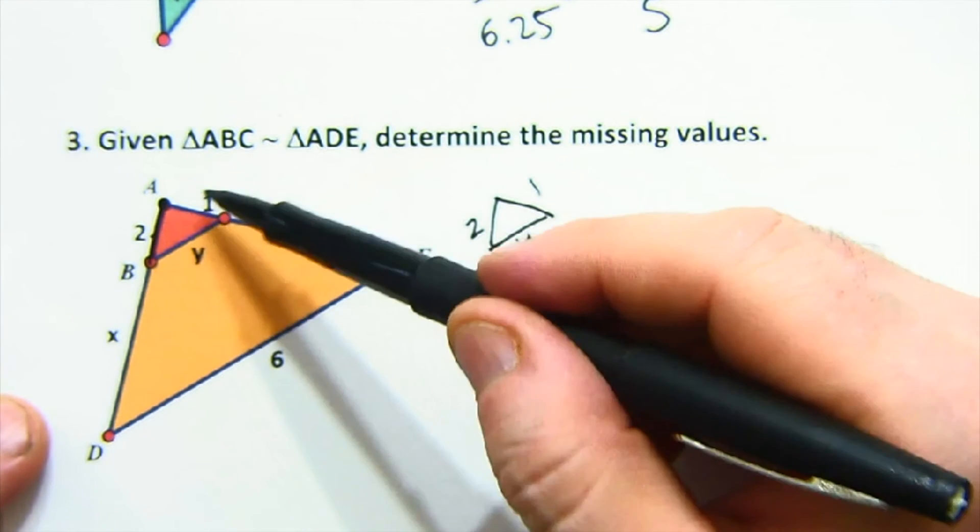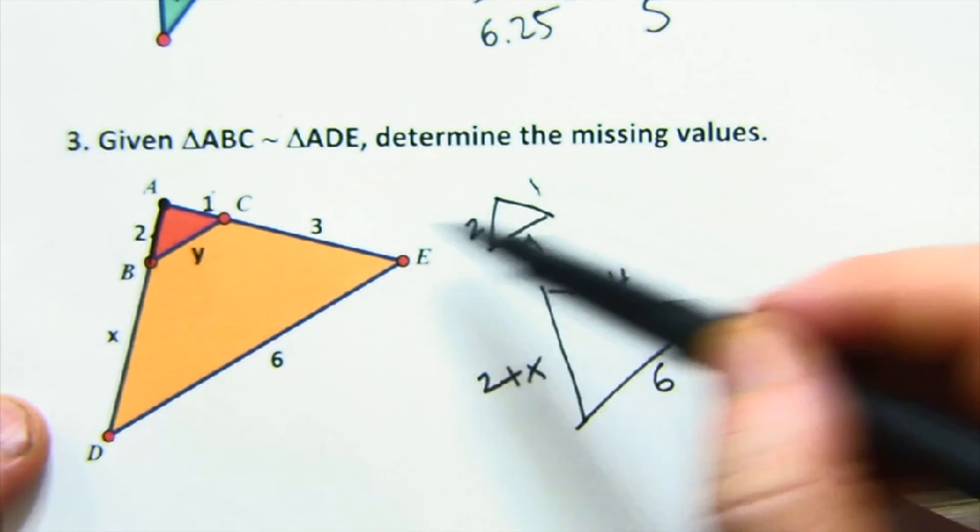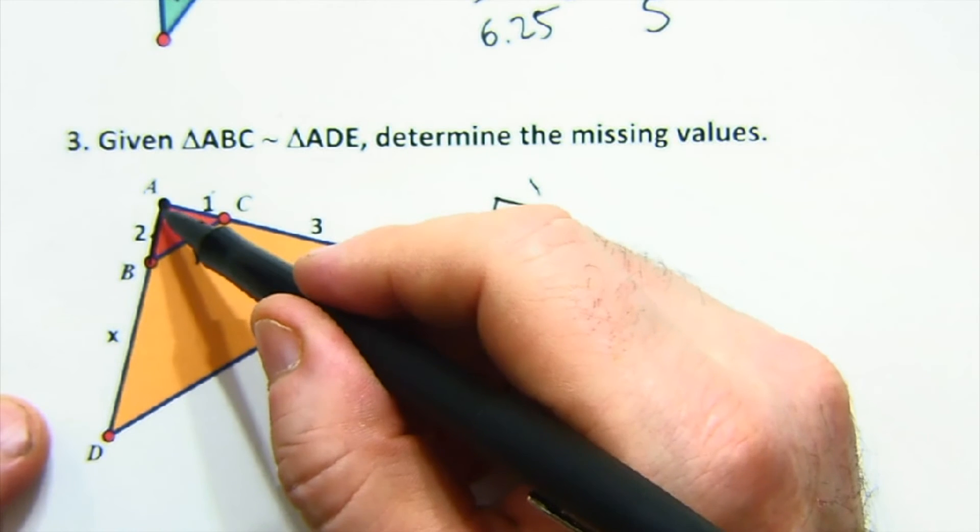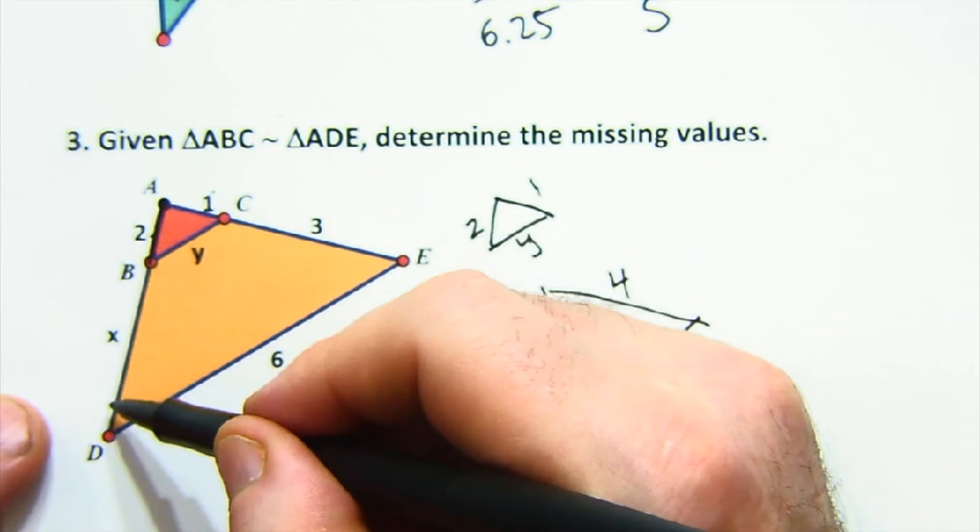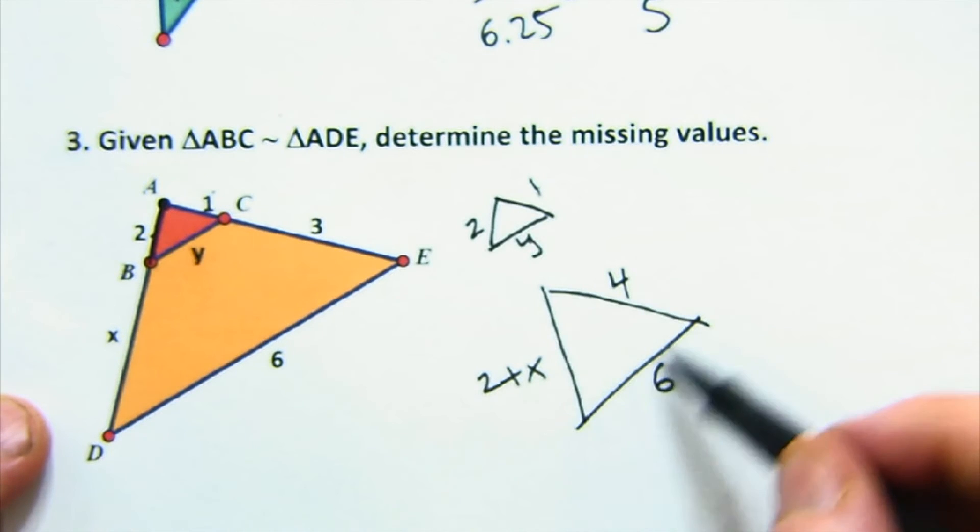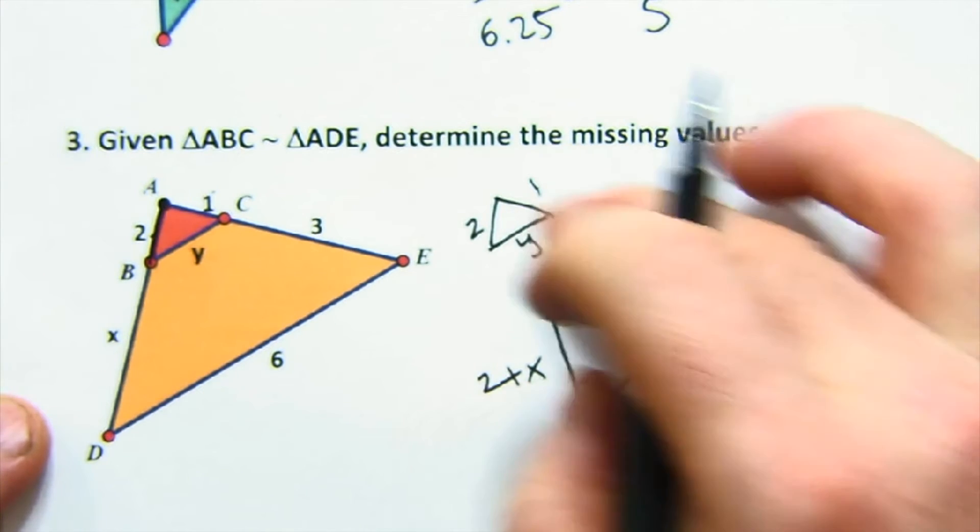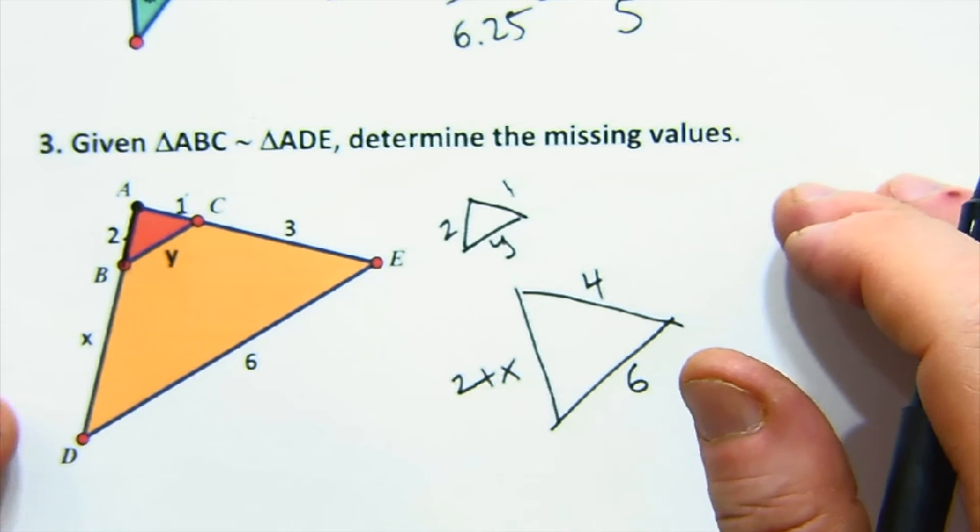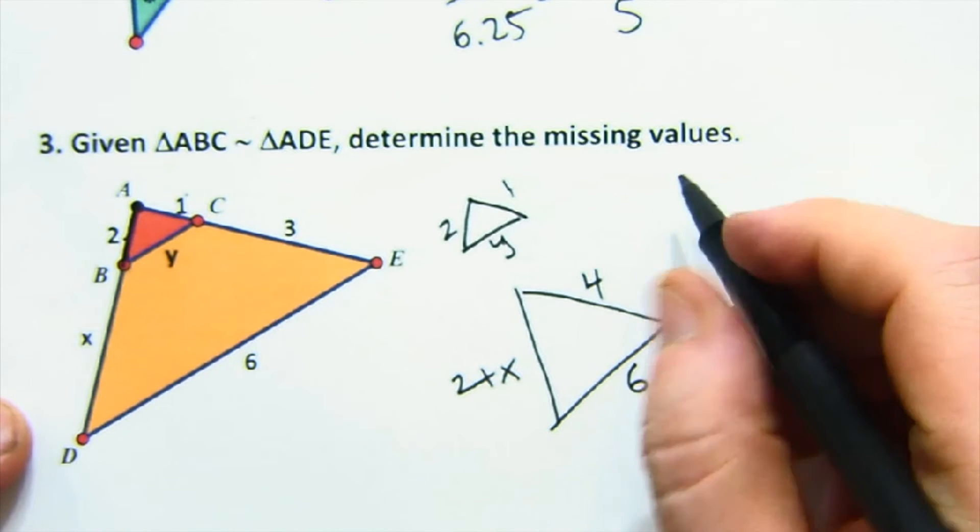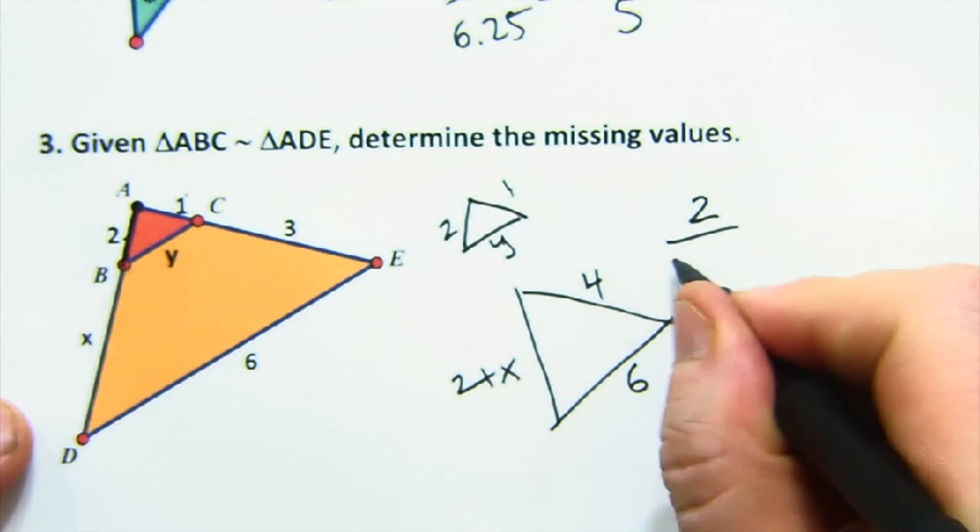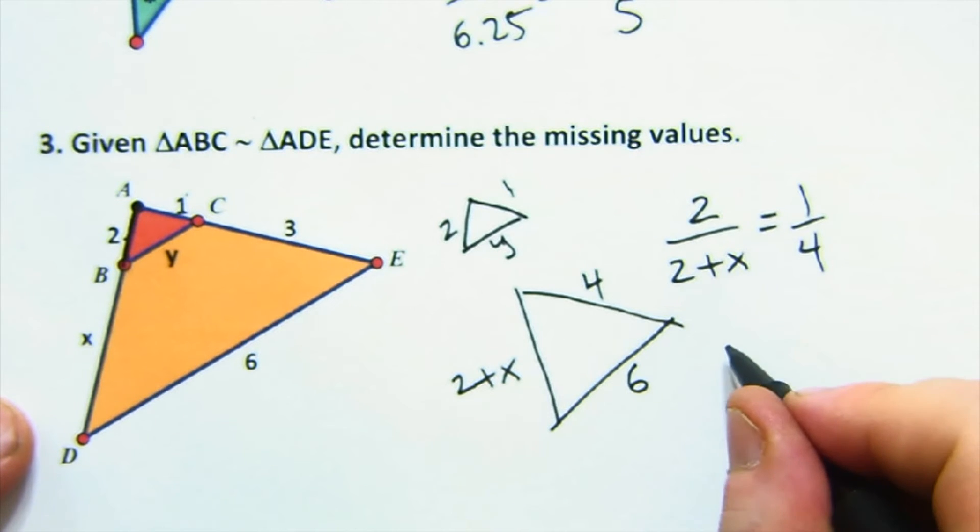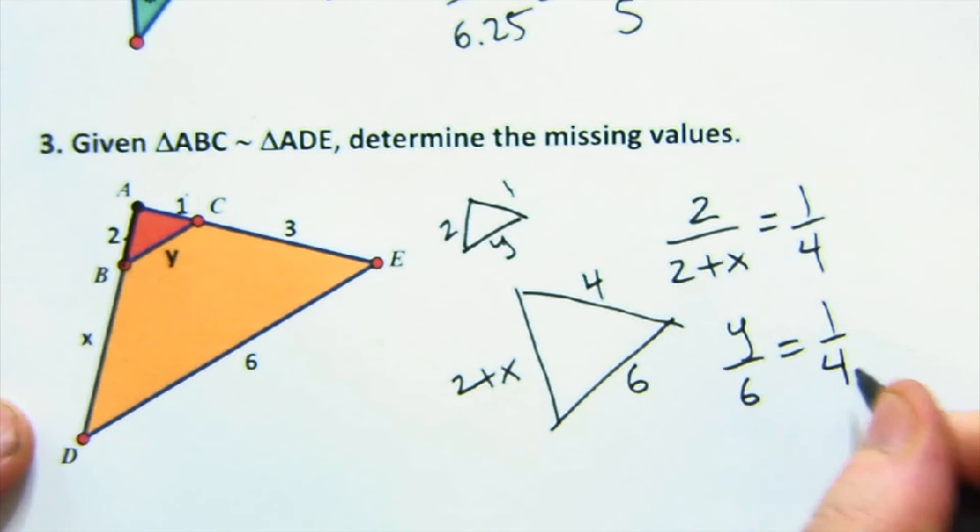You see how the two and the one and the y, they are all normal because they're all full sides of the little guy. Notice the big triangle is not x, it's 2 plus x, and this side is 4, and this side is still 6. Now, everything is labeled based off of a full side of a triangle. This is a good thing. So now you can set it up. So you can say 2 is to 2 plus x as 1 is to 4, and you can say y is to 6 as 1 is to 4.